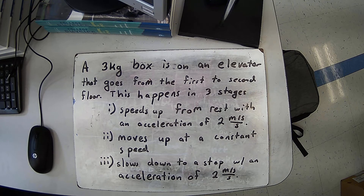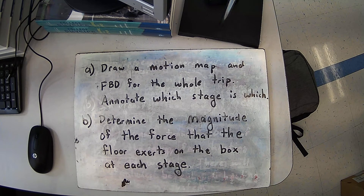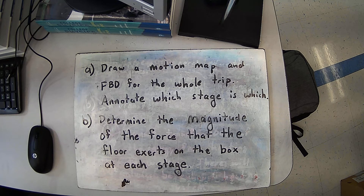Here are our goals in this problem. We want to draw a motion map and free body diagram for the whole trip, annotating which stage is which of those three stages. Then we want to determine the magnitude of the force that the floor exerts on the box at each stage. We'll also definitely draw the kinematics graphs — position, velocity, and acceleration versus time graphs. Go ahead and pause the video and write this down.